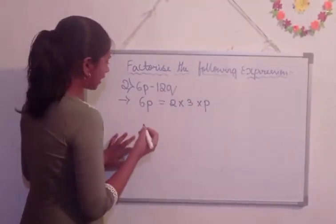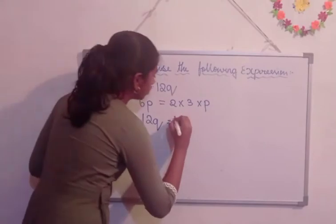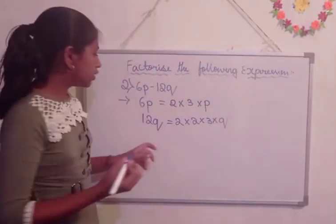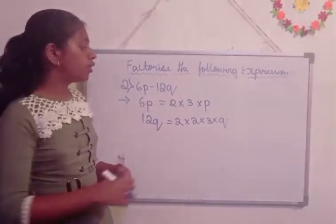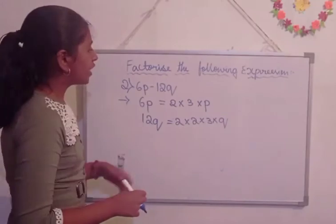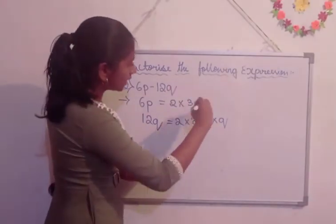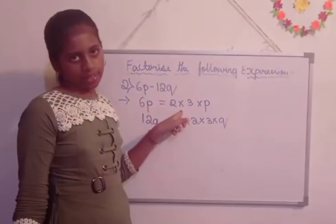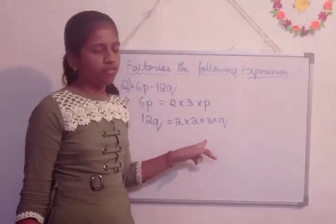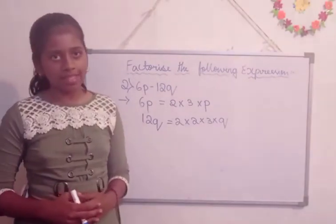So, next we are going to factorize 12q is equal to 2 into 2 into 3 into q. So, now we are going to find the common factors in these two steps. So, the common factors are 2 and 3. Here there are two 2s and here only one 2, so it is not a common factor. Only one 2 is the common factor. Another is not a common factor and then 3 is the common factor. And p, q are not common factors because there are different variables.